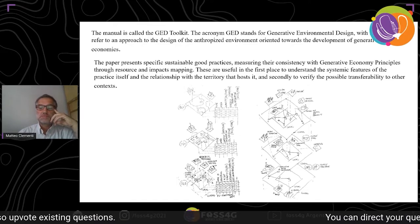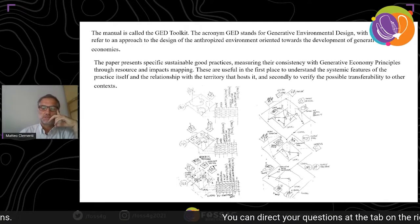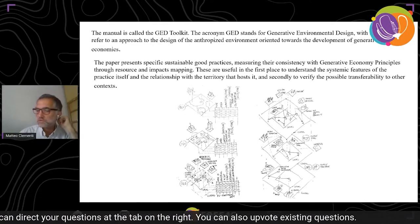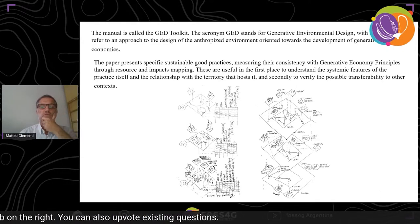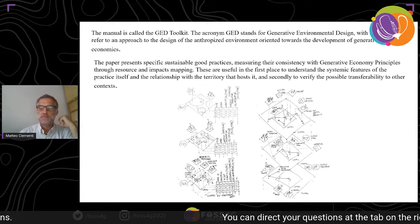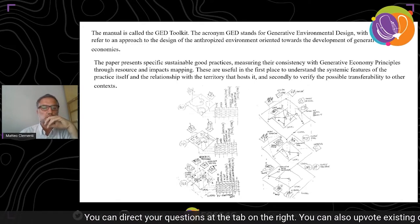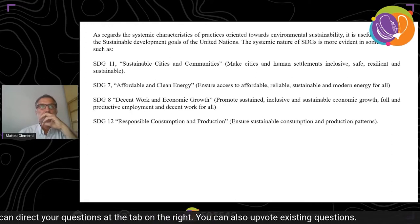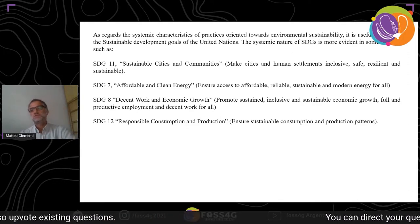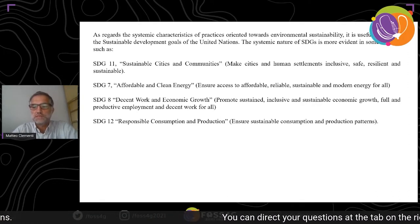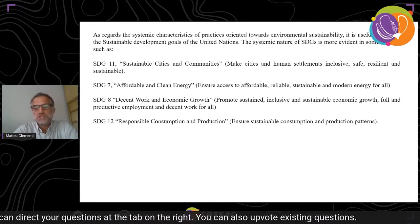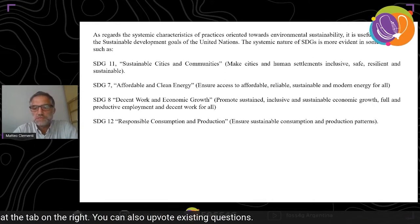The paper presents specific sustainable good practices, measuring their consistency with generative economy principles through resource and impact mapping. These are useful first to understand the systemic features of the practice and its relationship with the territory that hosts it, and secondly to verify possible transferability to other contexts. Regarding the systemic features of sustainability-oriented practices, it is useful to refer to the Sustainable Development Goals of the United Nations. The systemic nature of SDGs is most evident in some of them, such as Goal 11: Sustainable Cities and Communities.